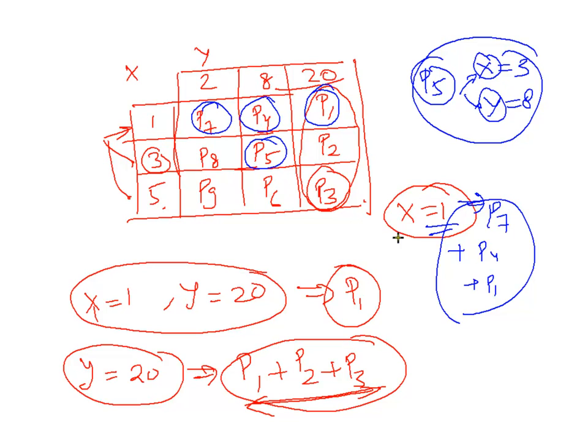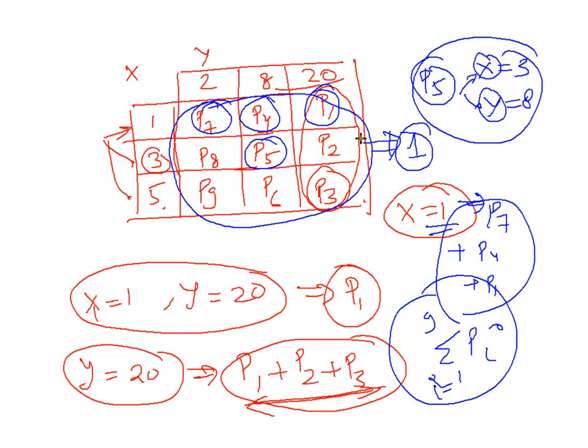Now what would be the summation of all the PIs from i equal to 1 to 9. That is summation of all this. Note that the summation of all this will be equal to 1. Because we know that Y can take only value of 2, 8, or 20. Probability of 20 is the sum of this, 8 is this, 2 is this. So these are the only three cases. So these are all mutually exclusive, collectively exhaustive. So the summation of this probability will be equal to 1.